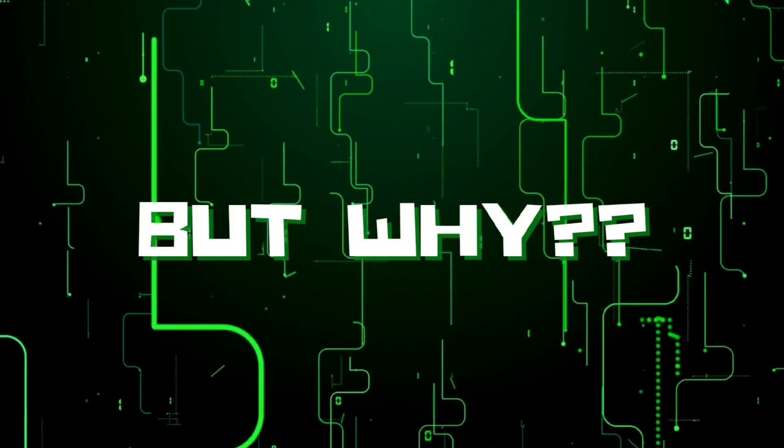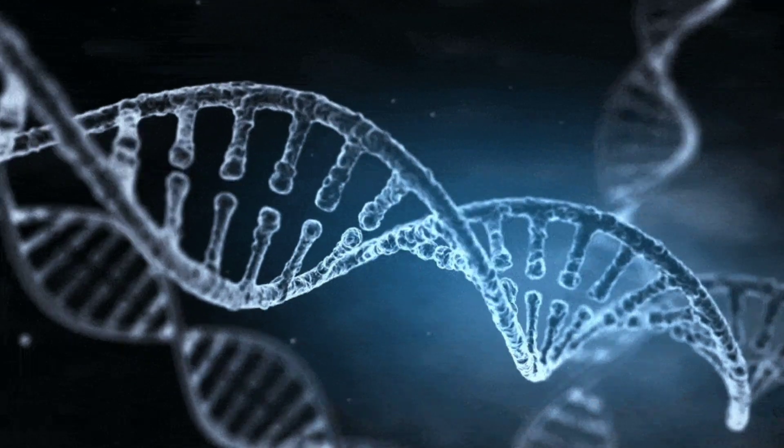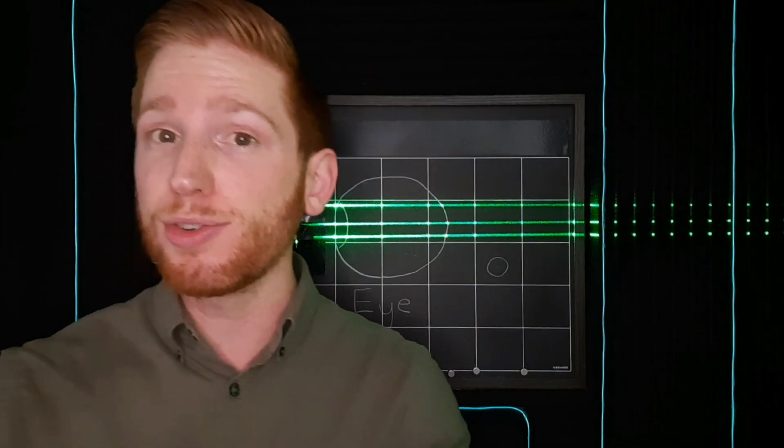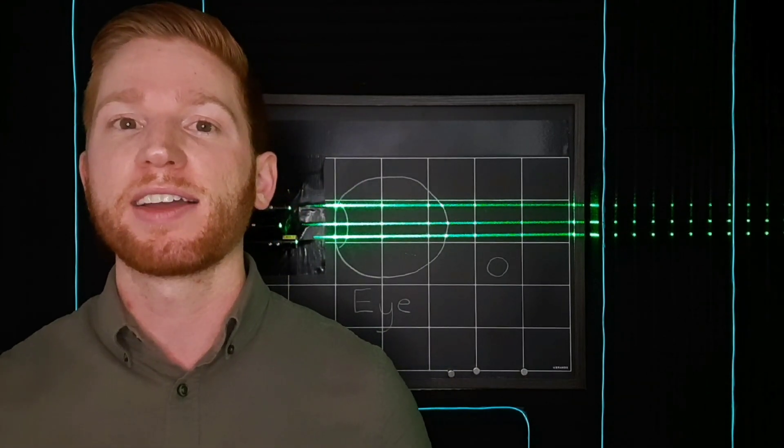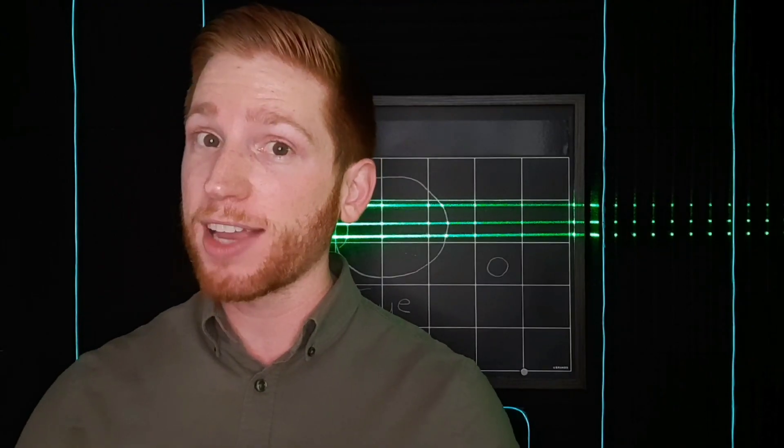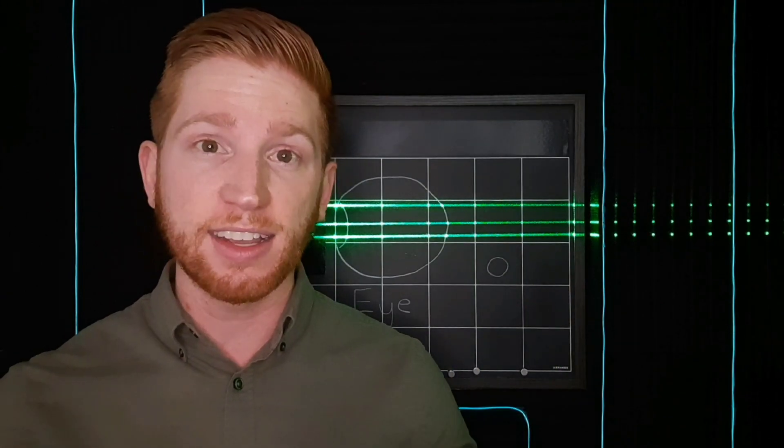But why would your eye be curved too much in the first place? A big factor of this is genetic. So if your parents had myopia, that definitely increases your chances of having it. But what you do can also impact the shape of your eye. Spending too much time looking at things up close like your cell phone, a computer screen, or even reading books in dim light can introduce myopia. And you heard that right, reading could actually be bad for your eyes, especially if you do it up close and in dim lighting.